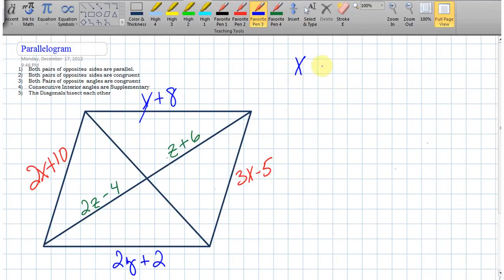How are we going to find x, y, and z? Well, let's notice. If it's a parallelogram, what do we know? Both pairs of opposite sides are going to be parallel. What else do we know?